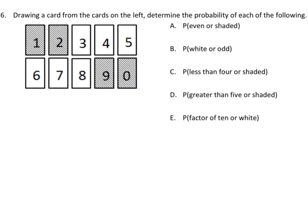Let's do another example — this is towards the end, it's number six. You're drawing some cards and trying to figure out some probabilities. The inside part is telling you the events you're trying to figure out. Our first one is the probability of drawing a card that's even or shaded.